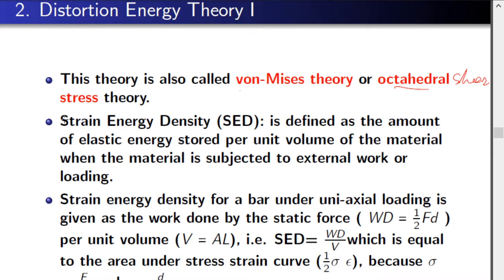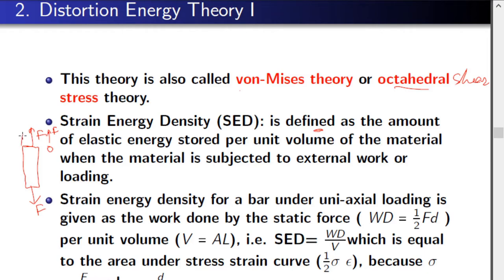To introduce the distortion energy theory, we need the concept of strain energy density. Strain energy density is defined as the amount of elastic energy stored per unit volume of the material when the material is subject to an external work or loading. Now let us consider a specimen or a bar subjected to a load F.